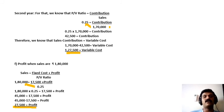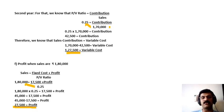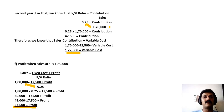So like this we have to ascertain the components of marginal costing with the help of the given information. We have calculated PV ratio, fixed cost, breakeven point, margin of safety, sales at a different level, variable cost for two years, and finally profit at a different level of sales. With this, I will conclude this presentation. In the next session, we will work out a problem on the preparation of the break-even chart. Thank you.